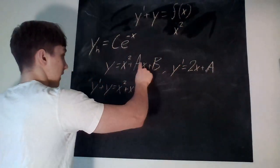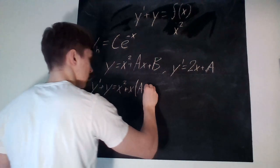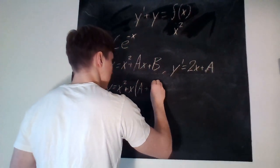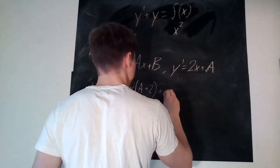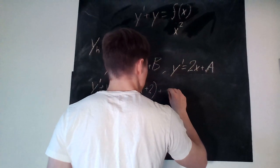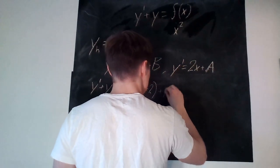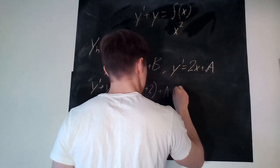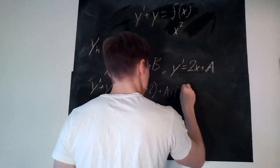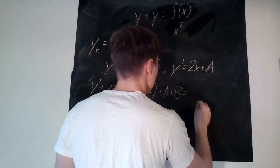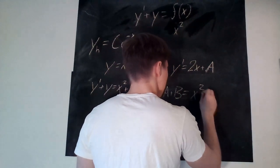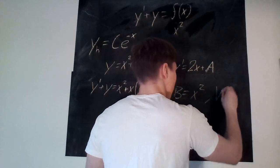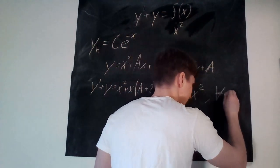So we have x terms: a plus 2. And then for constant terms, we have b and a, so plus a plus b. And we want this to be equal to x squared for all x.